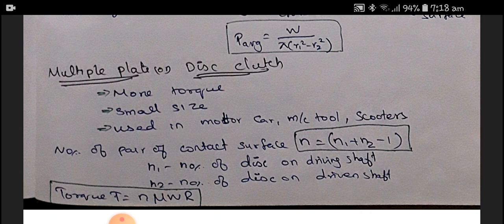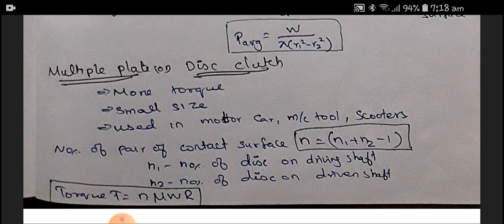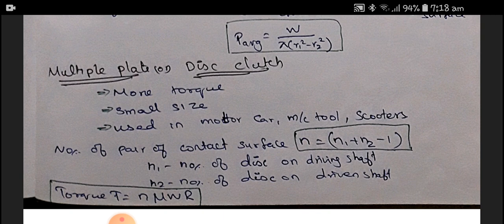For the multi-plate clutch or disc clutch, the application is very simple — more torque can be transmitted, it is smaller in size, and it is used in motor cars, machine tools, and scooters. The number of contact pairs is the very important condition: N equals N1 plus N2 minus 1, where N1 is the number of discs on the driving shaft and N2 is the number of discs on the driven shaft. Torque T equals NμWR.